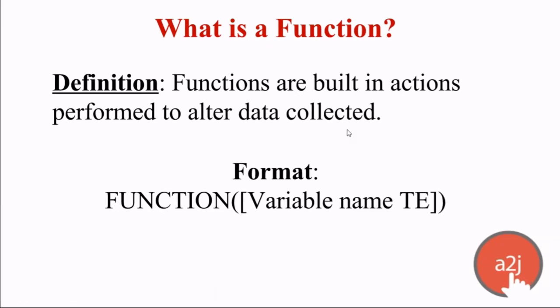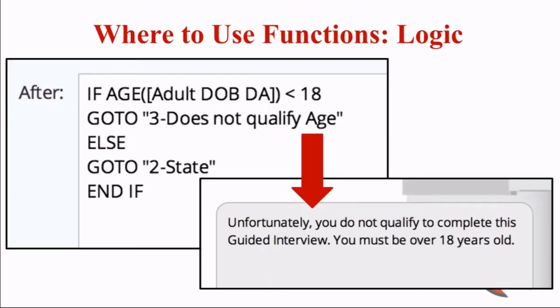So we can move on to functions. A function is basically a built-in action performed to alter the data collected. The basic format for all functions is: the function name all in caps, parentheses, brackets around the variable name, close brackets, close parentheses. In actuality, you only need brackets if there's a space in the variable name, but based on standard naming conventions in this community, it's always a good idea to wrap your variables in brackets to avoid errors.